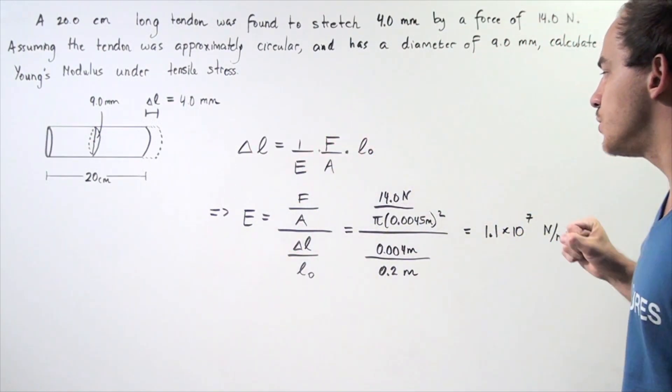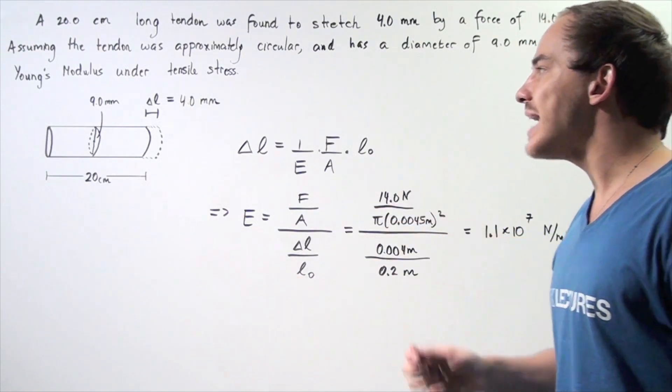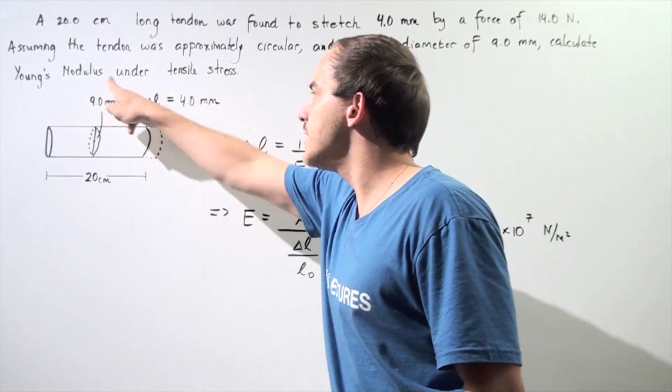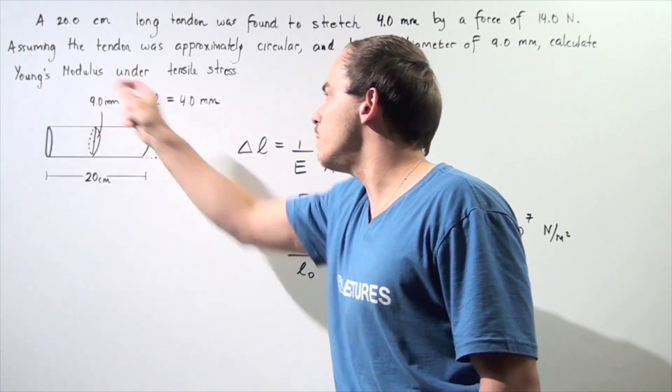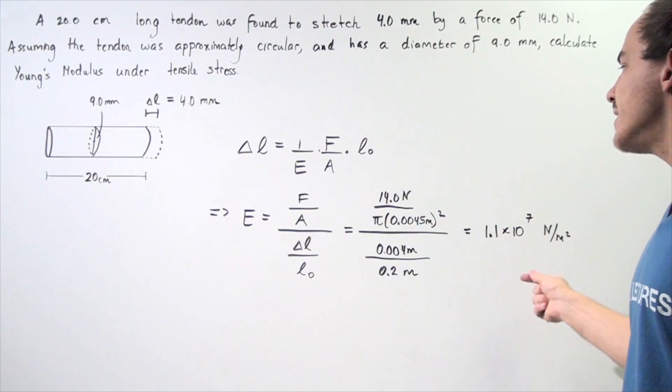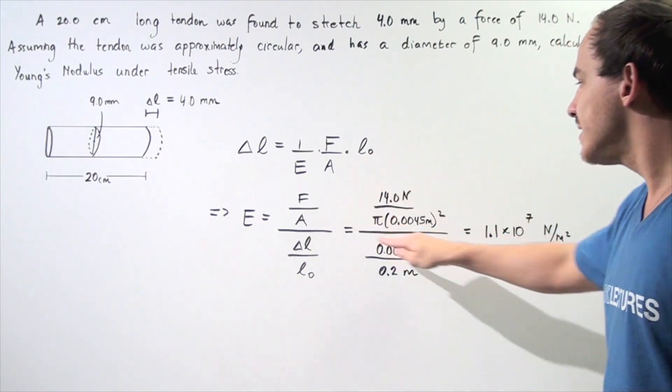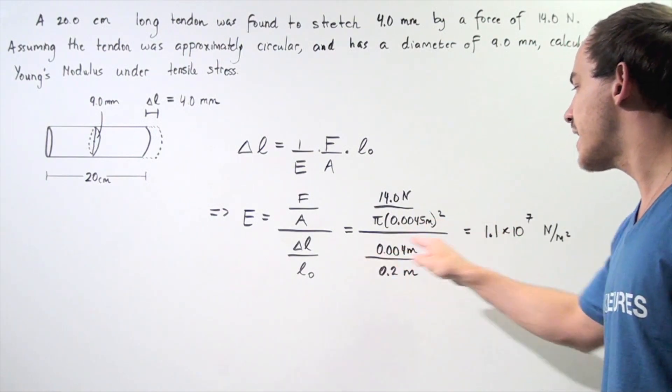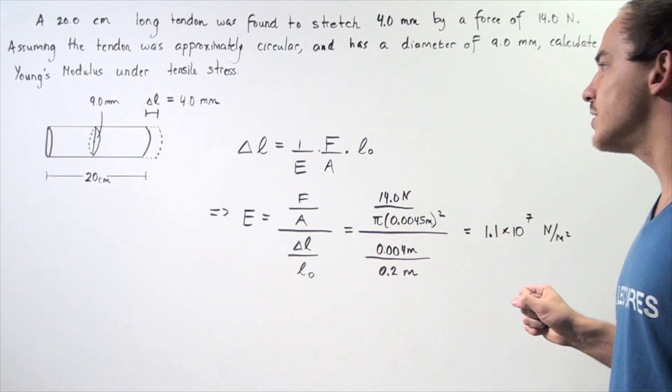Force is 14 newtons, A is simply pi times radius squared, where the radius is simply half of this, and we must convert this to meters. So we have 0.0045 meters squared times pi, we calculate this quantity and then divide that by 0.004 meters divided by 0.2 meters.